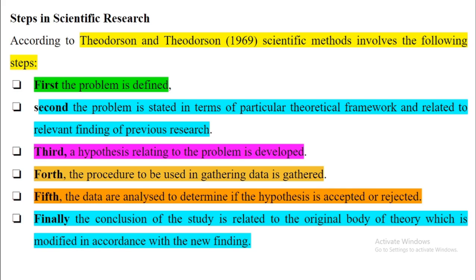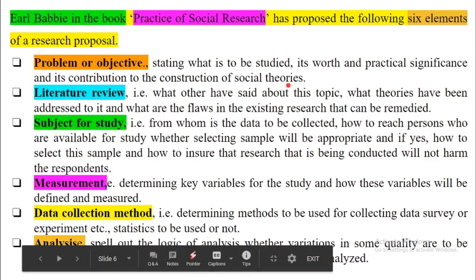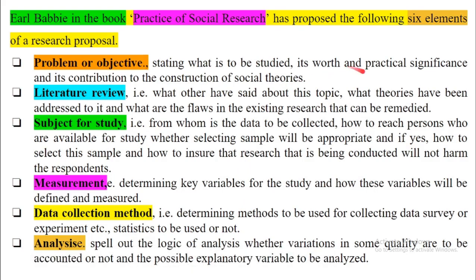Babbie, in his book 'The Practice of Social Research,' proposed six elements of a research proposal. First, problem or objectives: stating what is to be studied, its practical significance, and its contribution to the construction of social theories — that means you have to problematize or objectify what you want to do.